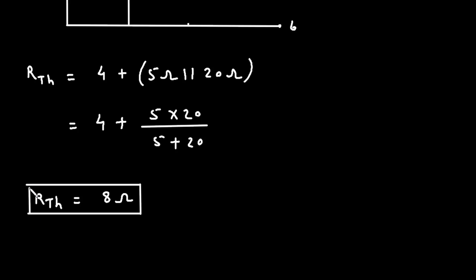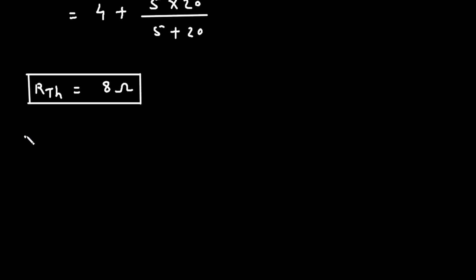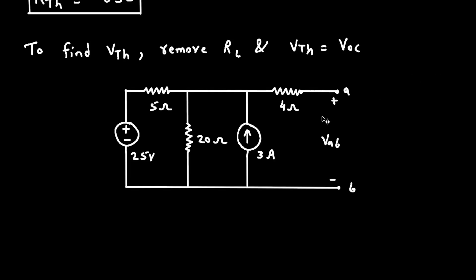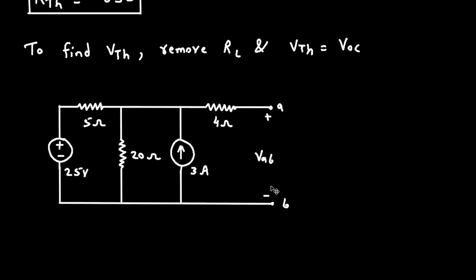Now we got the value of RTH. Next we have to find the value of VTH — Thevenin's voltage. To find VTH, again what we will do is remove RL, and VTH is equal to VOC, that is open circuit voltage. Here the RL is already absent and this is the open circuit voltage. Now this will be our VTH.